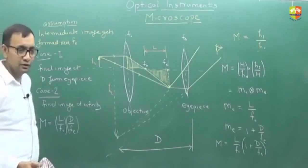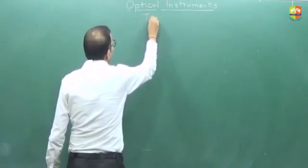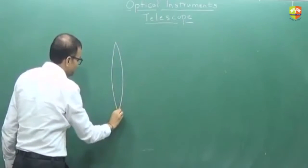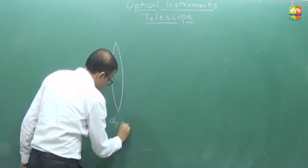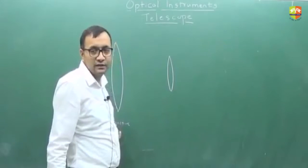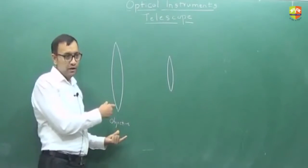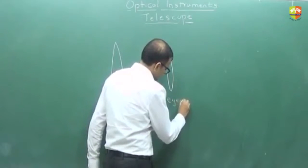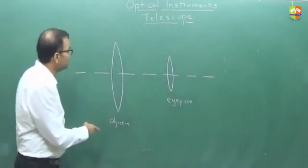Now we will discuss the telescope and magnification due to the telescope. A telescope also has two lenses — an objective and an eyepiece. There is a small correction: in a compound microscope the objective is smaller and the eyepiece is larger, but in a telescope the objective is larger.